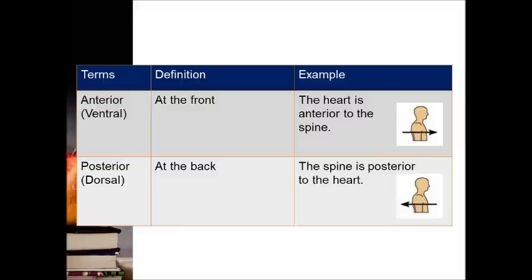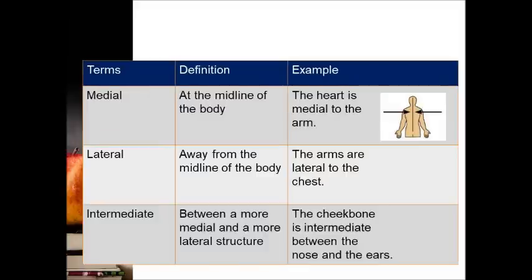Meanwhile, anything located at the back is called posterior. Medial means at the midline — for example, your nose is medial to the eyes. Lateral means any structure that is away from the midline — for example, the arms are lateral to the chest.